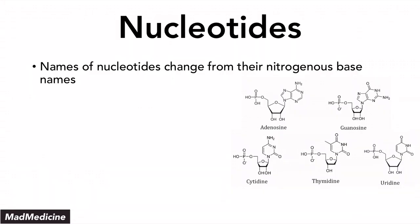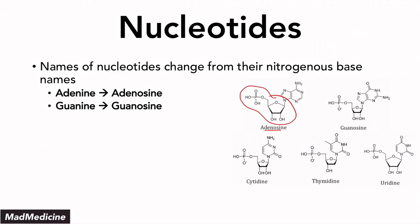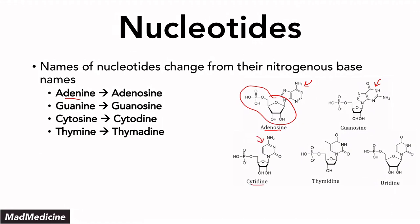Nucleotides are named after their nitrogenous base — the name changes when the base is bound to the ribose and phosphate group. Adenine becomes adenosine, and guanine becomes guanosine. The same applies to the pyrimidines: cytosine becomes cytidine, thymine becomes thymidine, and uracil becomes uridine. That is very important to understand.